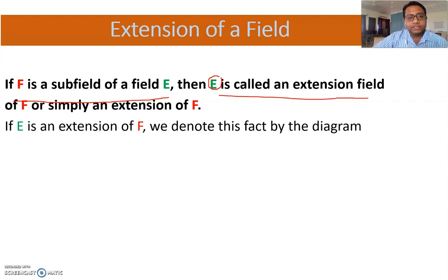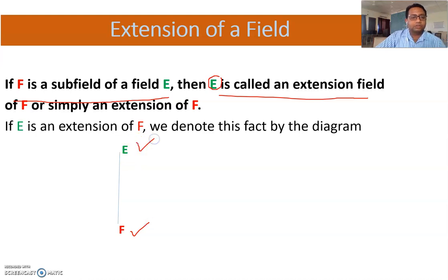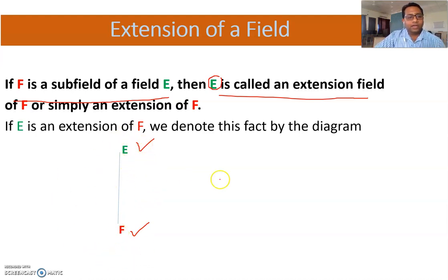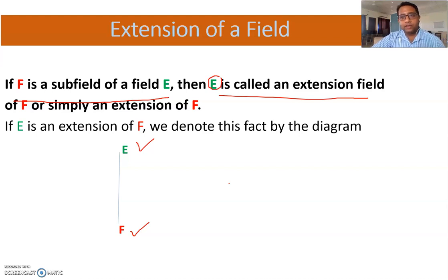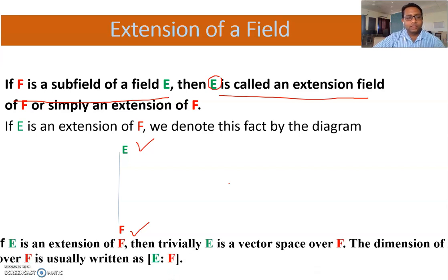If E is an extension of F, we denote this fact by a diagram। Diagram बहुत simple है — जो छोटी field F है उसको नीचे लिखना है और जो उससे बड़ी field E है उसको ऊपर लिखना है। यह एक tower की form में construct करते हैं — छोटी field F है, बड़ी field E है जो F को contain करती है, और दोनों fields हैं। E को हम बोलेंगे extension।